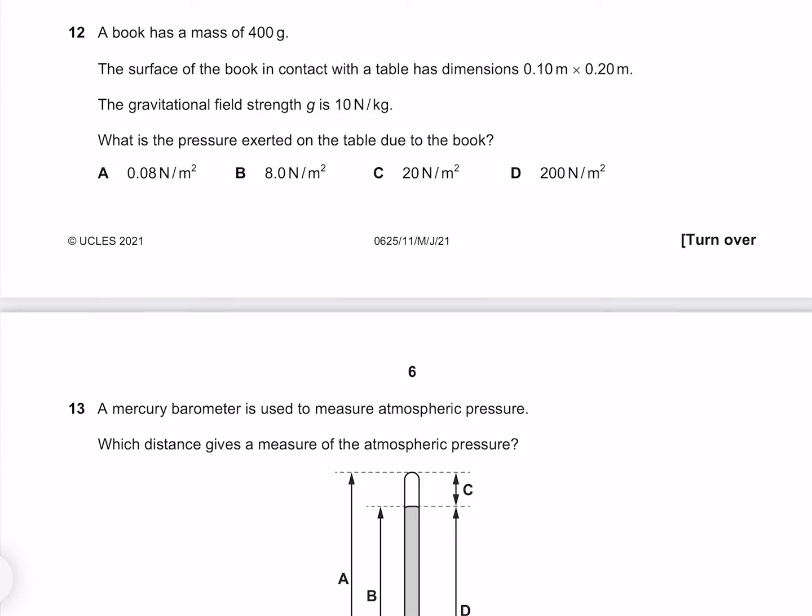A book has a mass of 400 grams. The surface of the book in contact with the table has dimensions 0.1 meters by 0.2 meters. The gravitational field strength g is 10 newtons per kilogram. What is the pressure exerted on the table due to the book? Pressure is force divided by area. Our force is going to be our mass of 400 grams, or 0.4 kilograms, multiplied by our gravitational field strength of 10, and then divided by our area of 0.1 times 0.2, which gives me 200 newtons per meter squared. So our answer must be D.